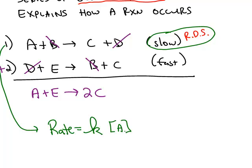But this time, because we have the experimental evidence that step one is slow, that means the coefficient is equal to the exponent.